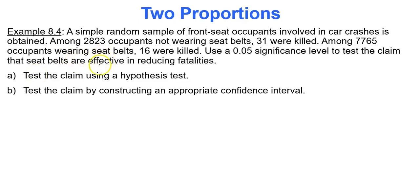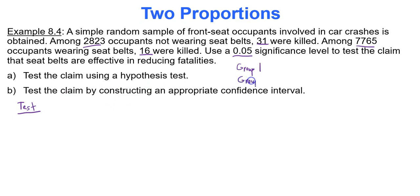For our last example on seat belts: a simple random sample of front-seat occupants involved in car crashes was obtained. Among 2,823 occupants not wearing a seat belt, 31 were killed; among 7,765 occupants wearing seat belts, only 16 were killed. We use a 0.05 significance level to test the claim that seat belts are effective in reducing fatalities. Group one is those not wearing a seat belt and group two is those wearing a seat belt.